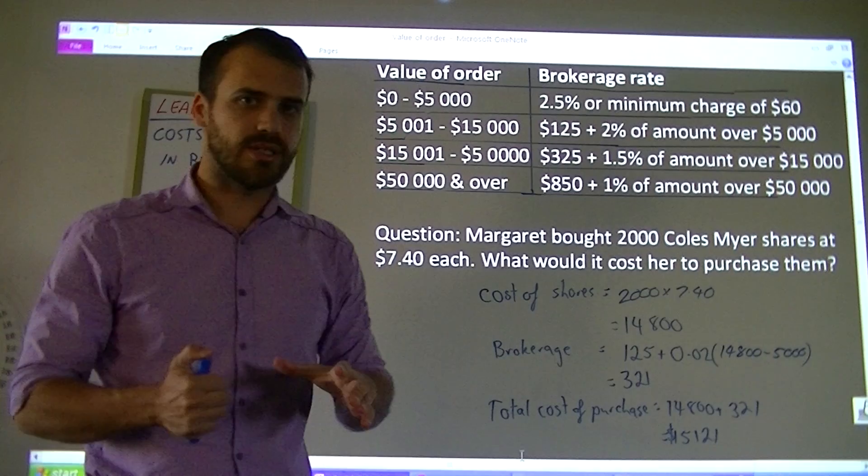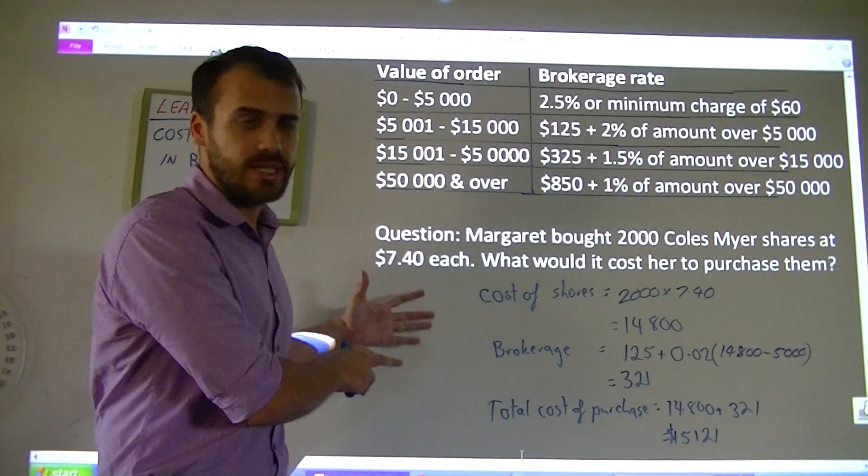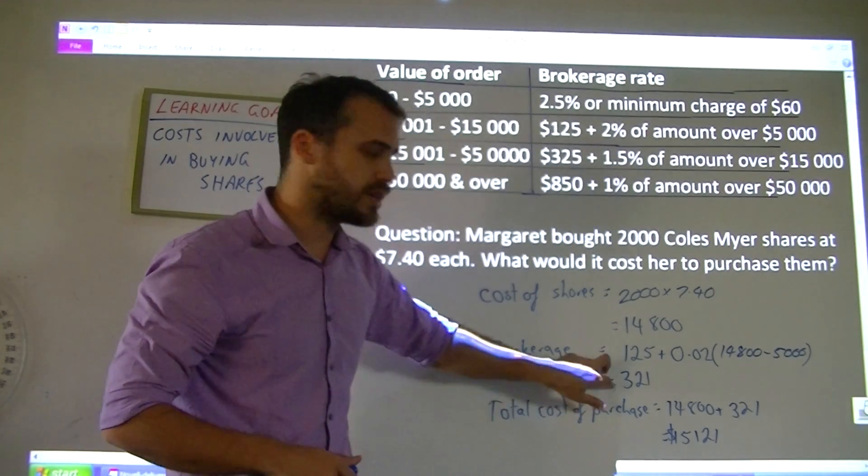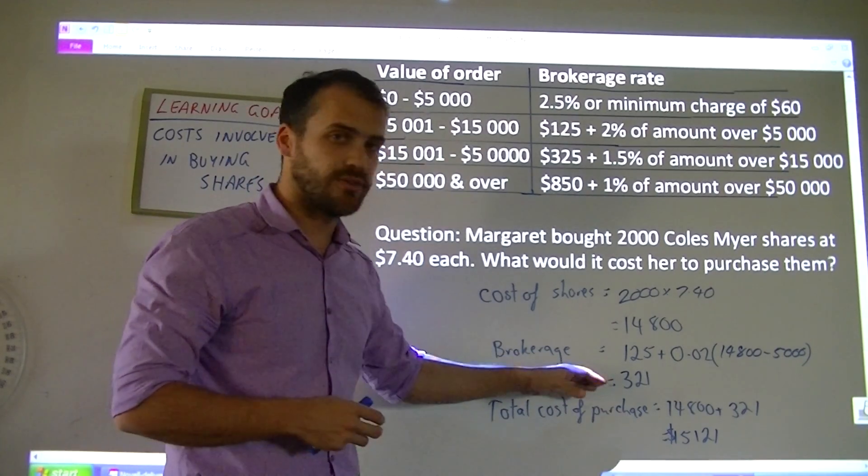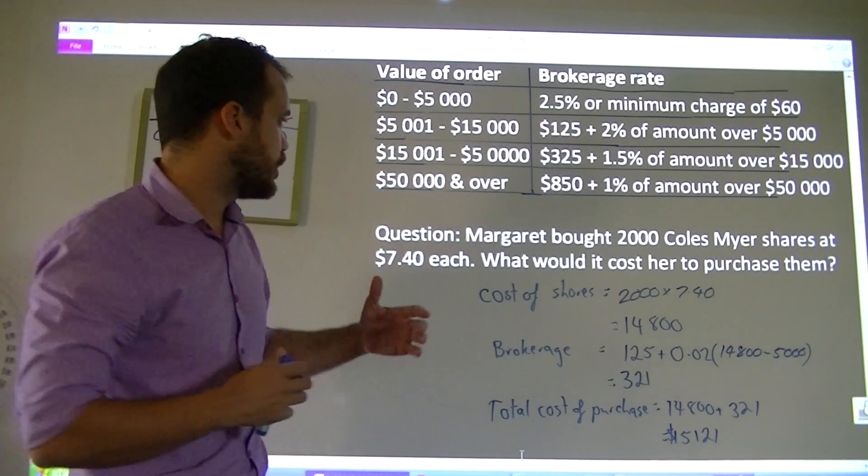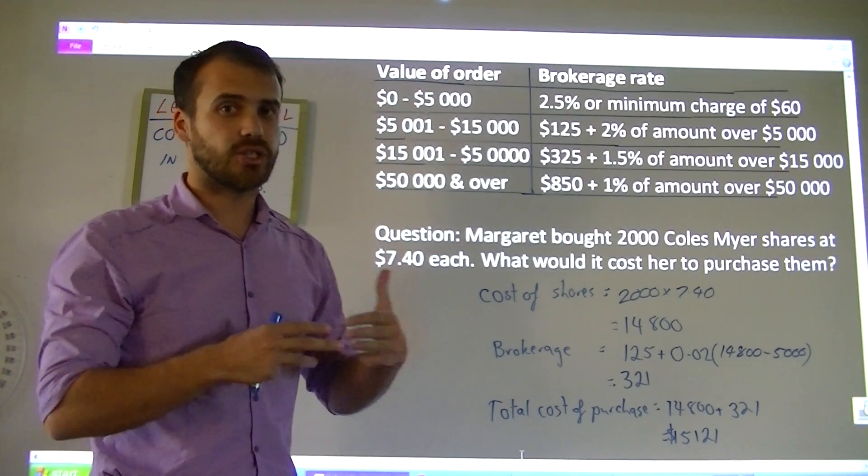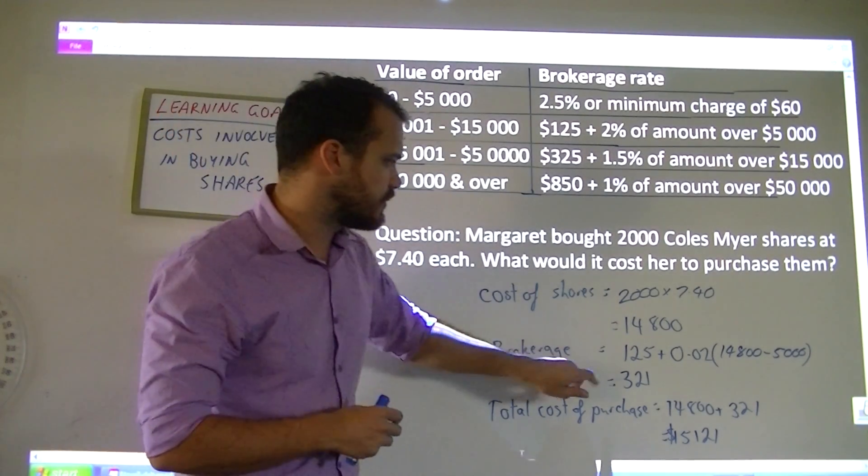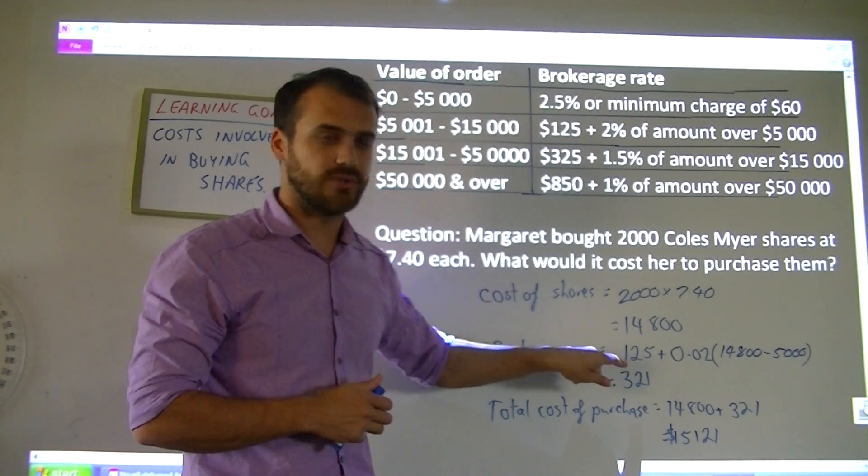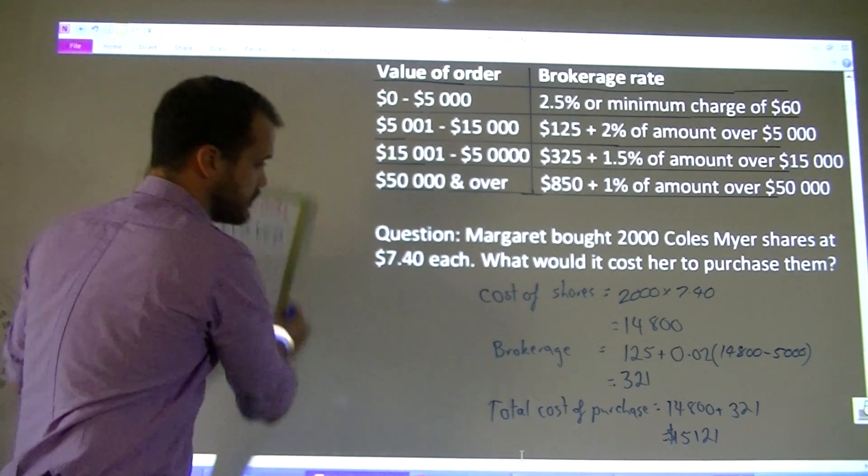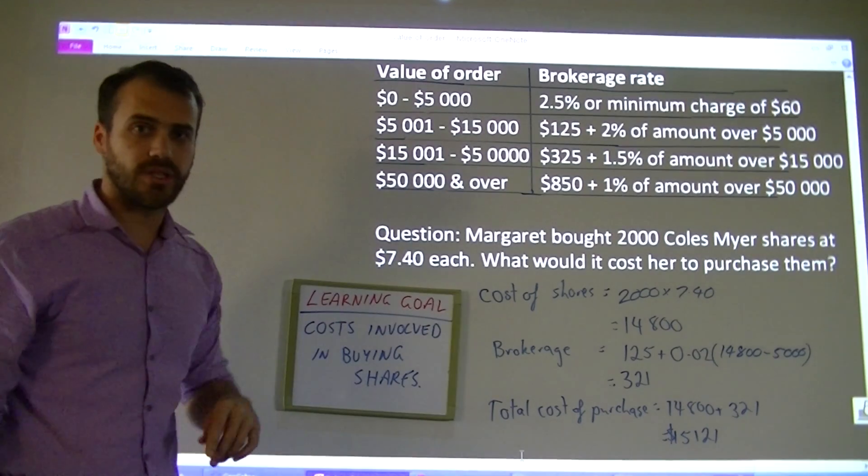Just a final note on this. Because the brokerage fee comes in at $321, if you buy shares at $7.40 and then sell them at $7.50, you might actually be making a loss because of these transaction costs involved. That's the costs involved in buying shares.